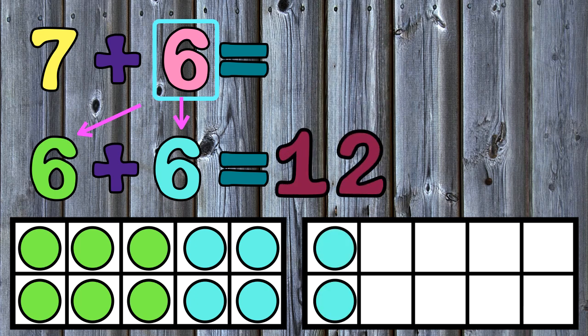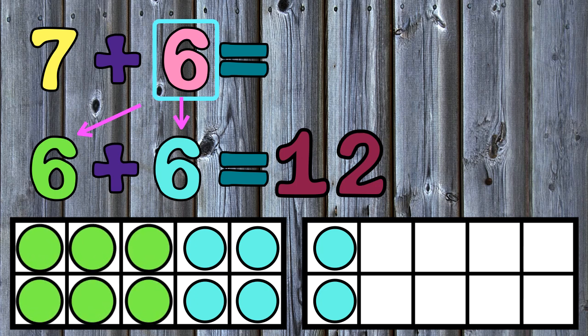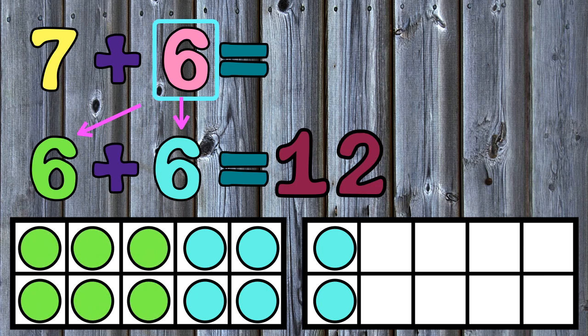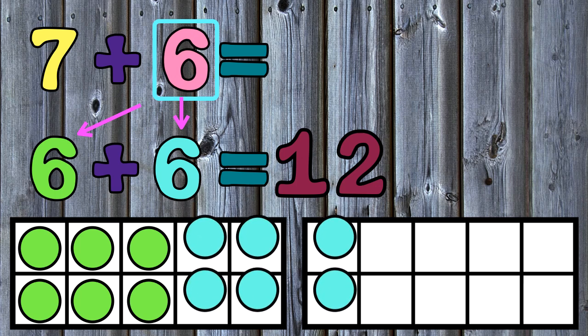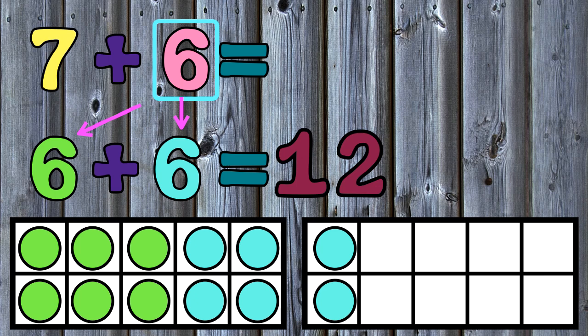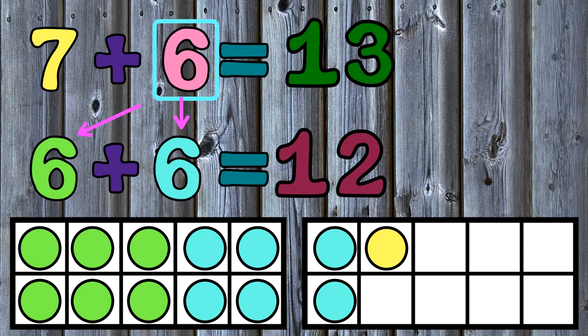I have a sum of 12 for 6 plus 6. Now, I will add one more dot. The first 6 dots represent the 6 in the second addend of 7 plus 6. The second set of dots represent part of the addend 7. I need to add one more dot to my 10 frame to get 7. The sum of 7 plus 6 is 13 because I just needed to add one more to the 12.